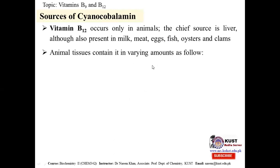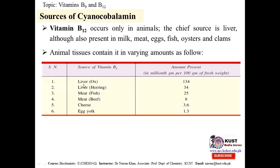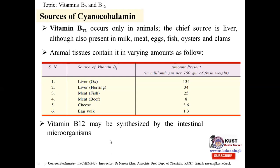Animal tissues contain varying amounts: ox liver is the richest source, containing about 134 micrograms per 100 grams of fresh weight. Meat contains 24, cheese contains 3.6, and egg yolk contains 1.3 micrograms per 100 grams. Liver is thus the richest source, though meat, cheese, and eggs also contain useful amounts.